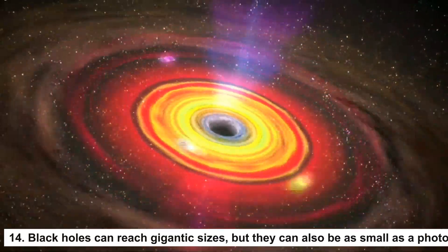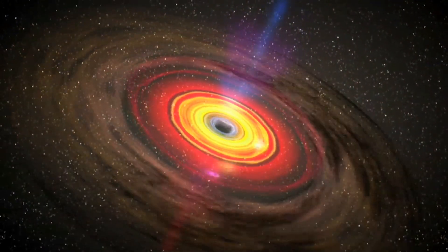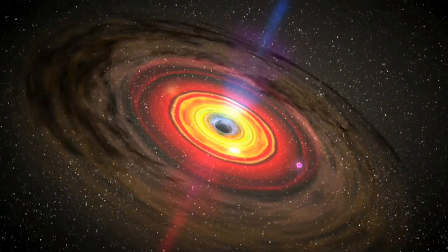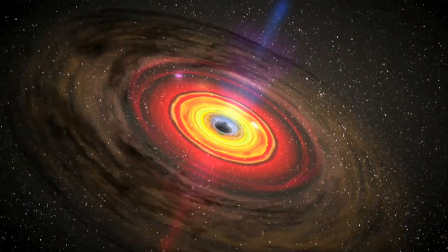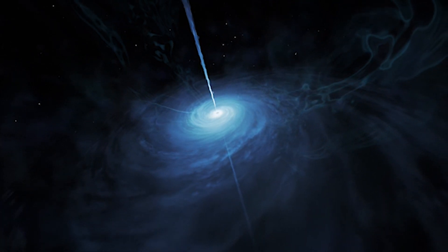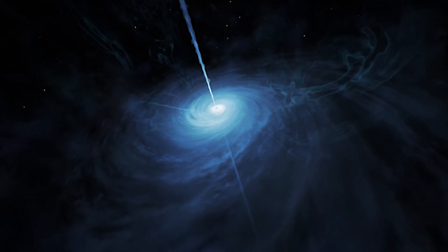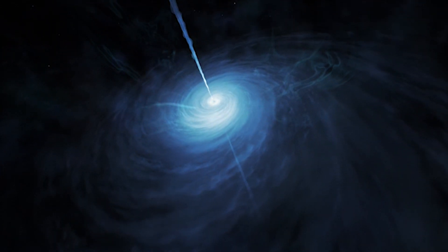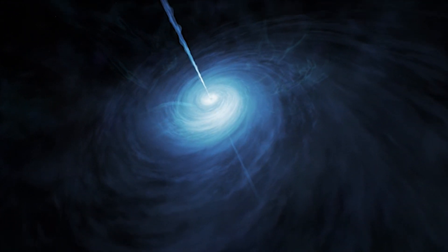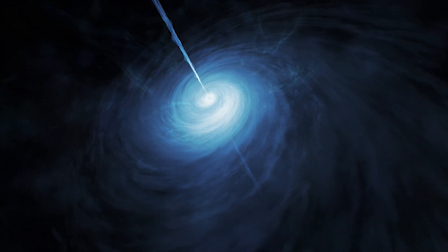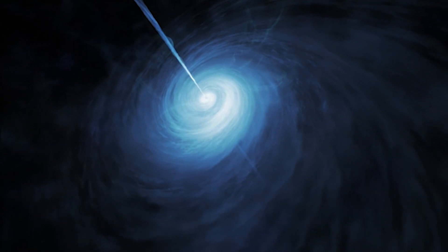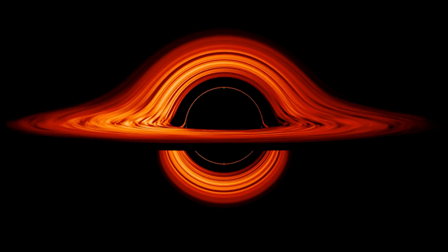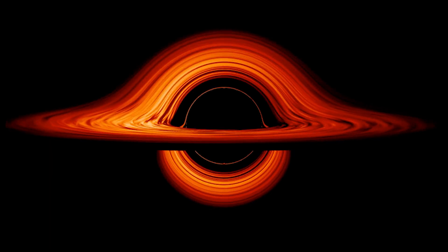Number 14: Black holes can reach gigantic sizes, but they can also be as small as a photon. Black holes are divided into three types based on their mass. Stellar black holes: A massive star can turn into a black hole when it runs out of fuel. All black holes start small, then grow larger as they consume matter around the galaxy. Supermassive black holes, ranging from hundreds of thousands to billions of solar masses, can form in a variety of ways. A small black hole may encounter a large gas cloud, or hundreds of thousands of tiny black holes can merge to form one giant hole. Finally, a star cluster can collapse together to form a supermassive black hole.